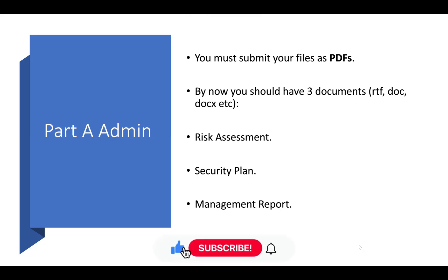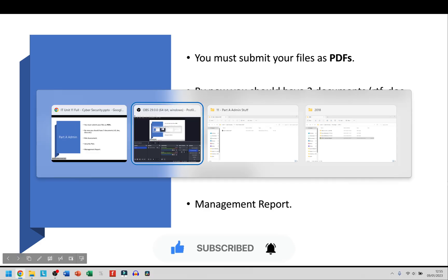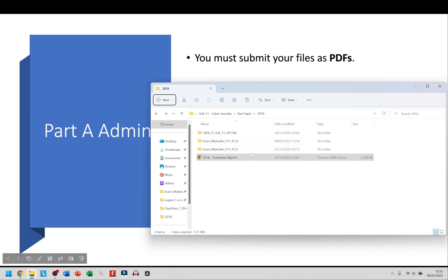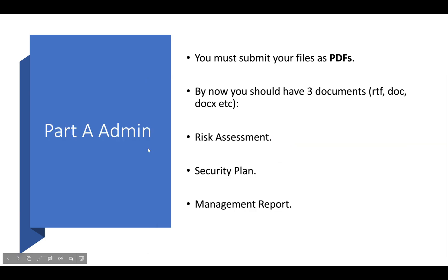Welcome back. This is just going to be Part A admin stuff that we have to do. After you think you've finished every single thing for Part A, this is what we're going to have to do. Let me go back to my folder. I've got my three documents — they're perfect. You must submit your files as PDFs. By now you should have three documents: risk assessment, security plan, and management report.